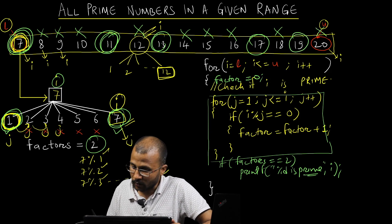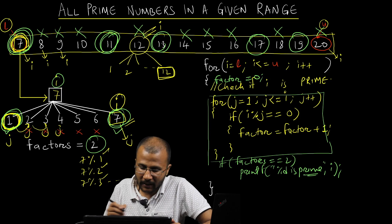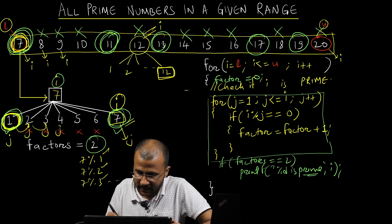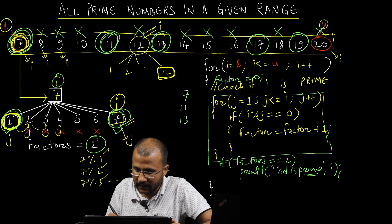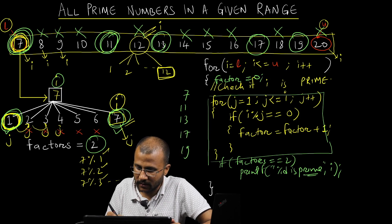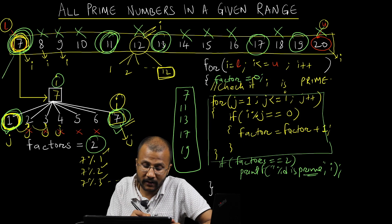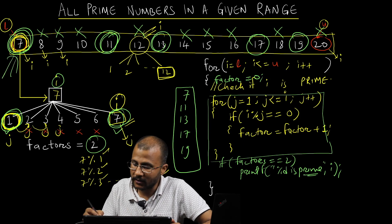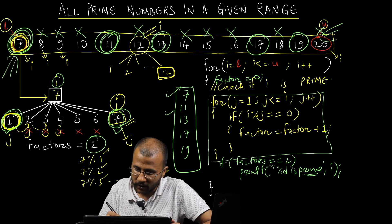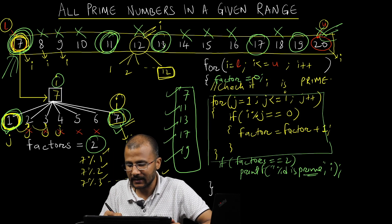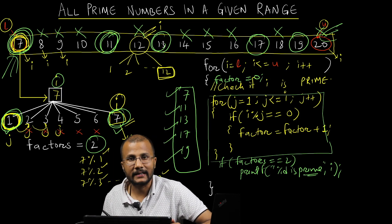The output for this particular program is all the prime numbers will be displayed. First 7 is displayed, then 11, then 13, then 17, and then 19. So this is the output — all the prime numbers between 7 and 20 are 7, 11, 13, 17, and 19. There are 5 prime numbers in total.